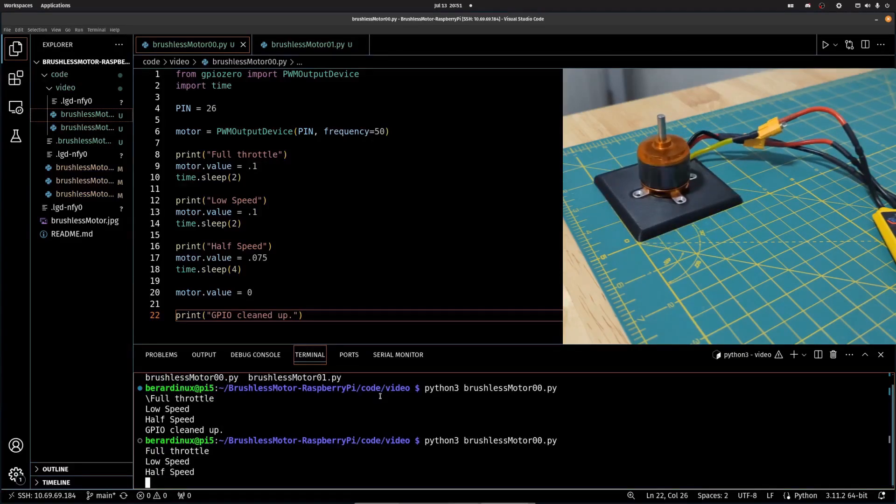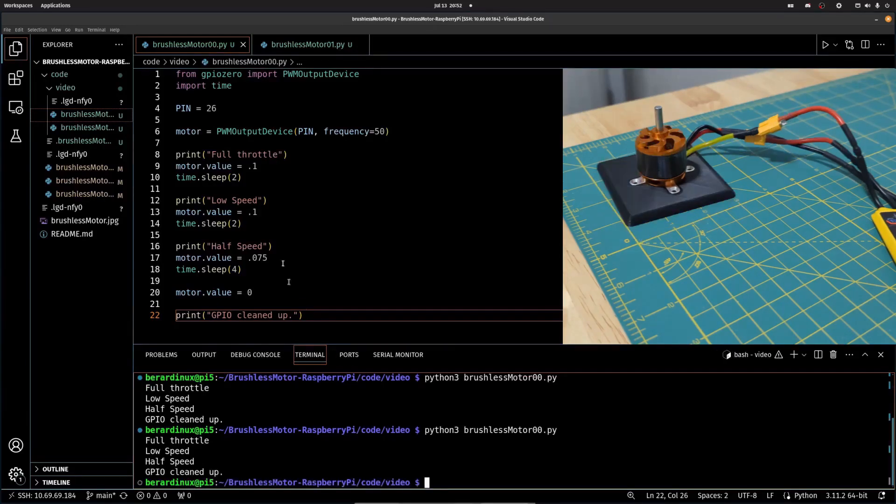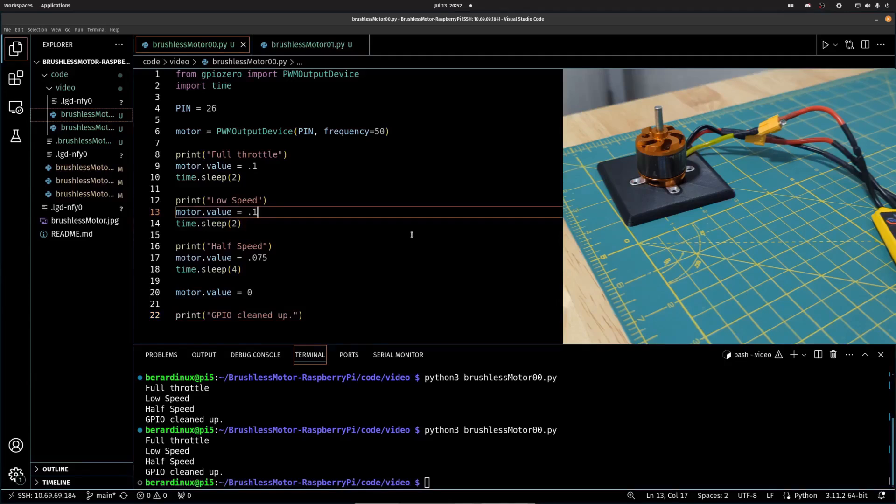Then we're going to set our low speed. I ended up mixing this up, it's supposed to be .05. I'll end up fixing that after. And then we're going to set our half speed, which is going to be .075. And then we're going to output motor.value equals 0 to output a 0% duty cycle once the script's done.